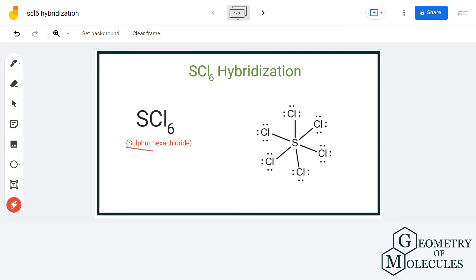It is the chemical formula for sulfur hexachloride. One of the easiest ways to find the hybridization is by counting the number of lone pairs attached to the central atom plus the number of sigma bonds it forms.